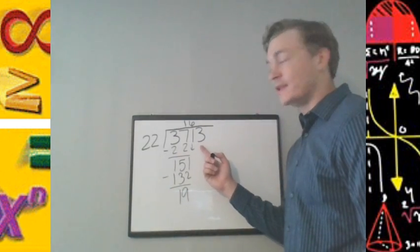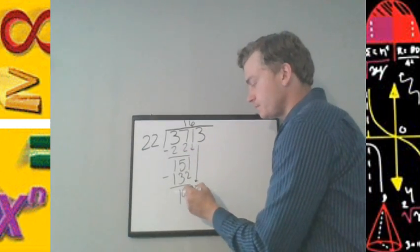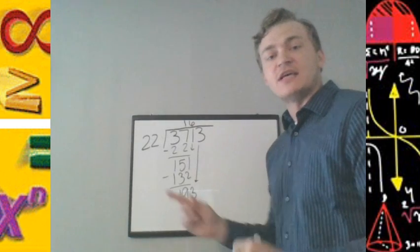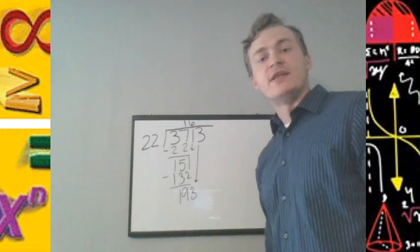Now we bring down the next digit, which is our last digit. And we ask ourselves, how many times will 22 divide into 193?